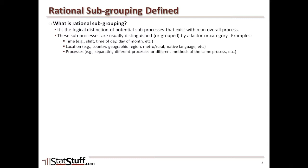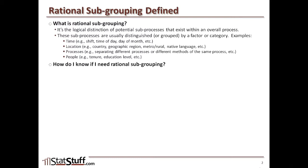Also, maybe by different processes — where you're separating different processes or different methods of the same processes, breaking out where it's performed, how it's performed, or the different types of implications of the process. Those things could represent some natural subgrouping within your data. Or maybe people, as far as tenure, educational level, or other kinds of factors you might want to use to distinguish people. Those could represent different subgroups as well.